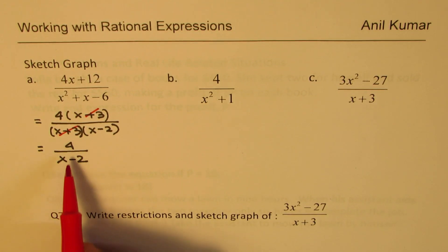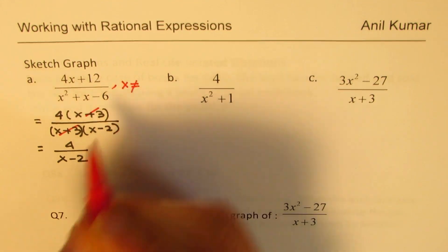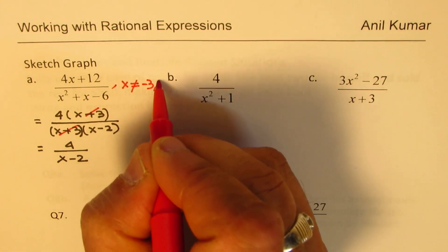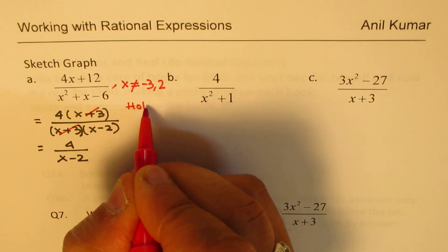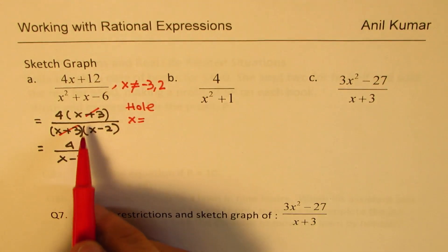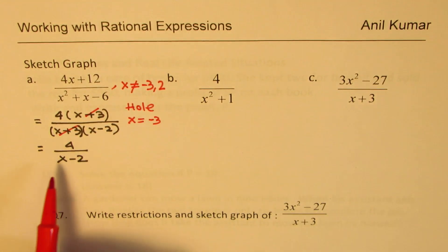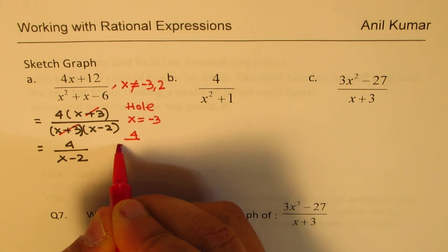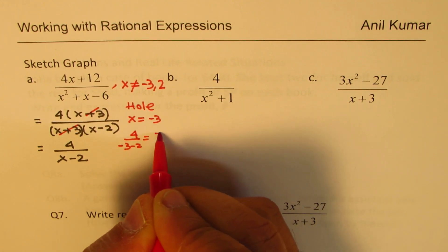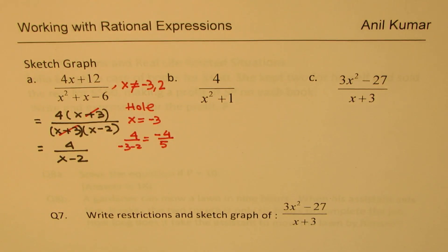From the original denominator we have two restrictions: x ≠ -3 and x ≠ 2. Since (x + 3) cancels, we have a hole at x = -3. What is the y-value there? Substituting -3 into 4 / (x - 2) gives 4 / (-3 - 2) = -4/5. So the hole is at the point (-3, -4/5). That is a very important point to understand.